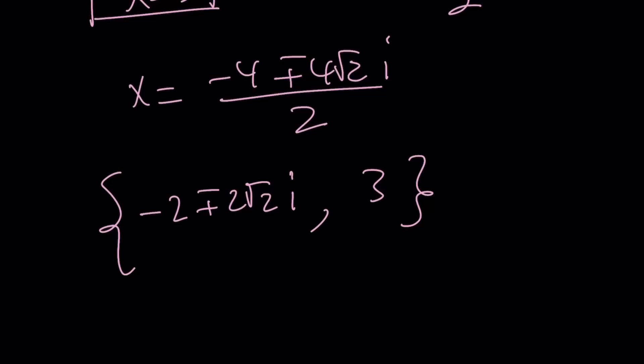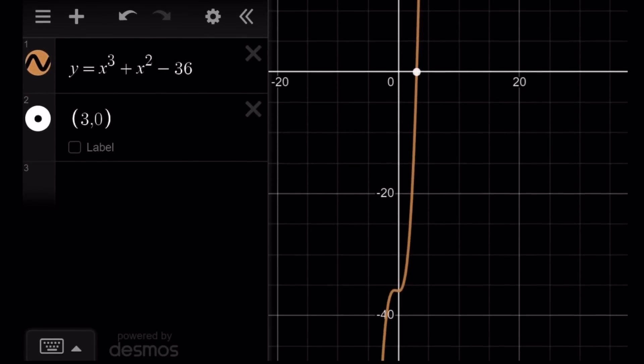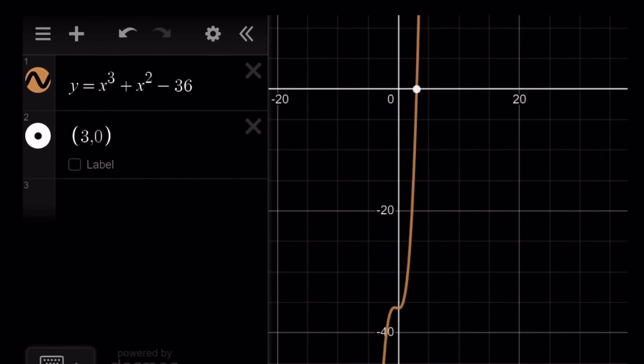Let's go ahead and take a look at the graph, which will also verify that we get one real solution. By the way, you could also tell that there's going to be one real solution by looking at the discriminant. But I don't think anybody wants to memorize the discriminant of a cubic equation, which is somewhat complicated. This is the graph of our function. I put the 36 on the left-hand side because if you graph x cubed plus x squared, 36 is going to be way above. You see that there's only one real solution, one x-intercept, and that is x equals 3.